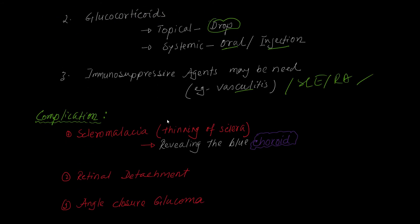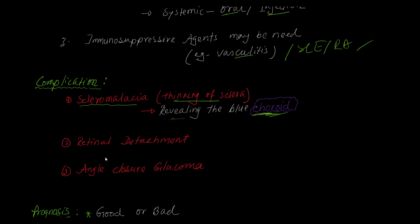What complications can scleritis cause? First is scleromalacia — malacia means thinning. Long-term, progressive destruction of the connective tissue of the sclera causes thinning, and through the thinned sclera, the underlying middle layer, the choroid (which is bluish in color), may become visible. Other complications include retinal detachment and angle-closure glaucoma, where the chronic inflammatory process obstructs the angle through which aqueous humor is absorbed.